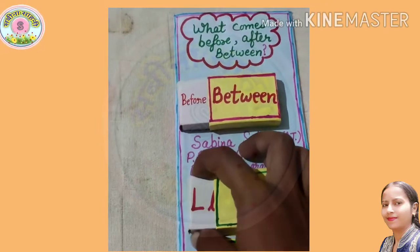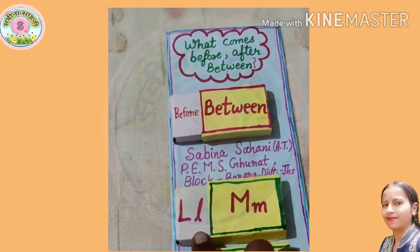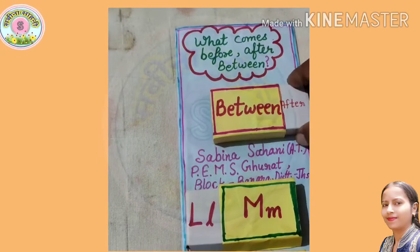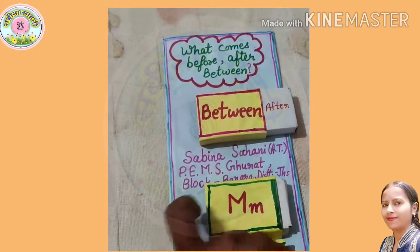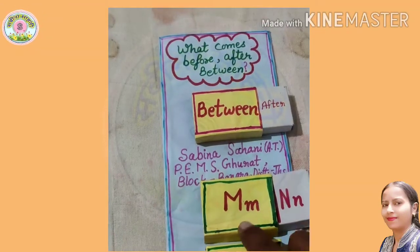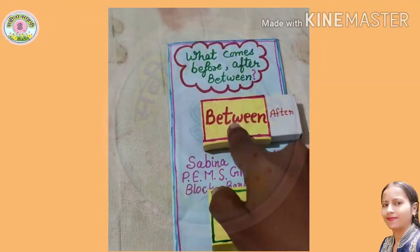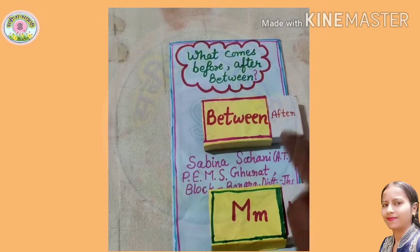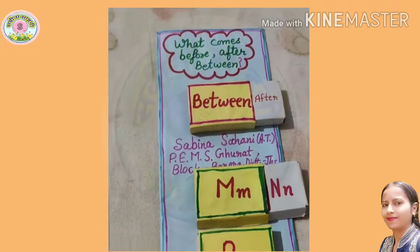Before is L. When we tell the children 'after', they will identify it from here. M, N — between M and N. After M, N. In this way, we can tell children before, after, and between.